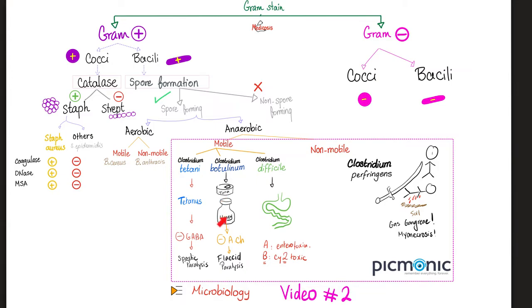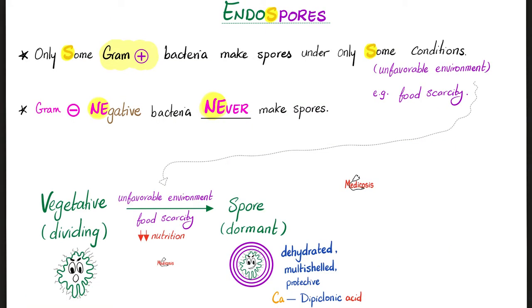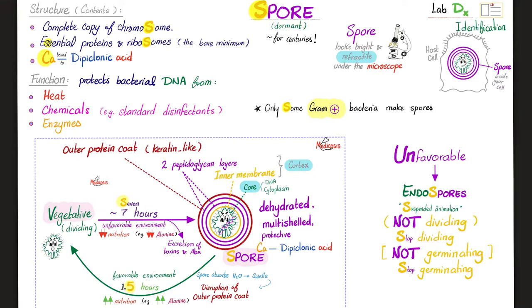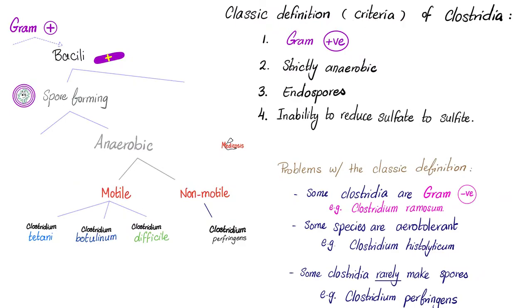Eventually, that neurotoxin inhibits acetylcholine release, causing flaccid paralysis. Can Clostridium botulinum make spores? Absolutely. Spores — structure-wise, they contain a lot of calcium. Function-wise, they provide protection. Here's the classic definition of Clostridia.